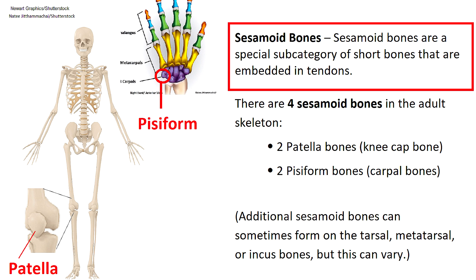We also have sesamoid bones, which some anatomists classify as a special subset of short bones. These are embedded in tendons. The word sesamoid sounds like sesame seed, because these seed-shaped bones get their name from a Greek word that literally means resembling a sesame seed. There are four sesamoid bones in the adult skeleton: two patella bones, which are your kneecaps, and two pisiform bones, which are carpal bones. Sometimes sesamoid bones can also form on the tarsal, metatarsal, or even the incus bone in the ear, but this can vary from person to person.